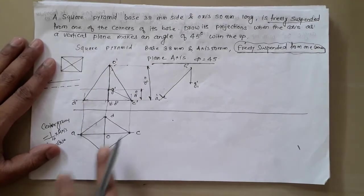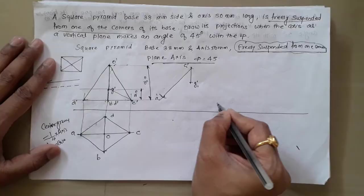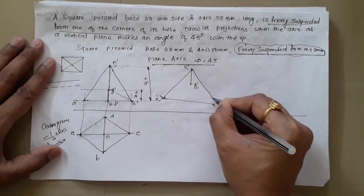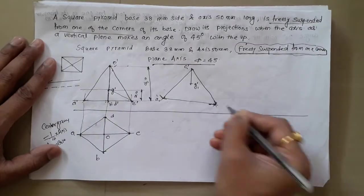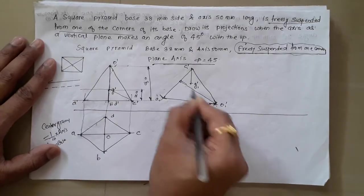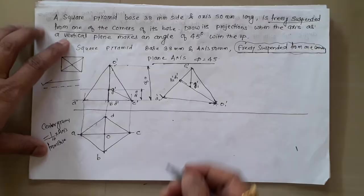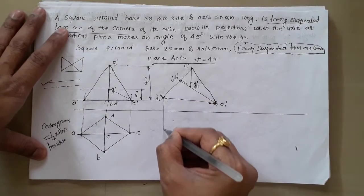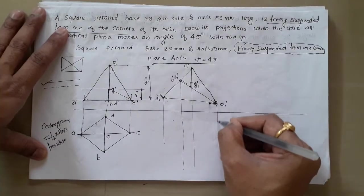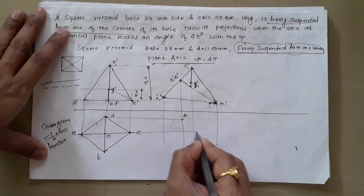To locate O1 dash, take A dash O dash distance (which equals C dash O dash) in your compass. With C1 dash as center and A1 dash as center, cut arcs — their intersection is O1 dash. Draw the axis line. This point will be B1 dash and D1 dash. Then take projections in the downward direction: projectors for A, for B and D, for C and G, and for O. From the previous top view, locate D1, A1, C1, B1, and O1.